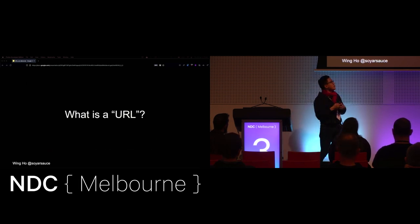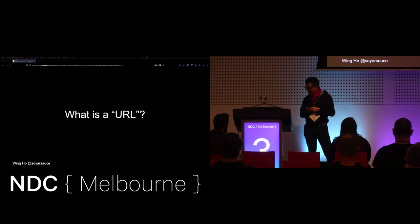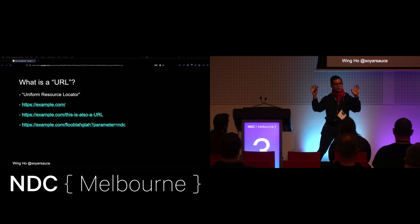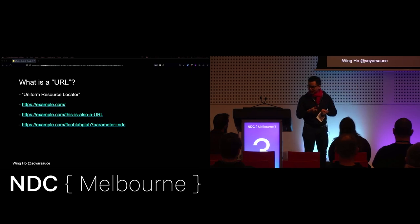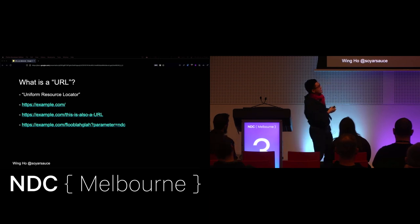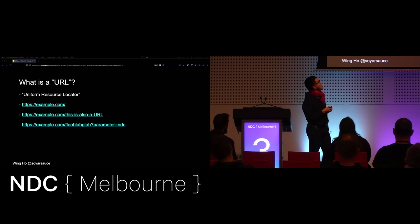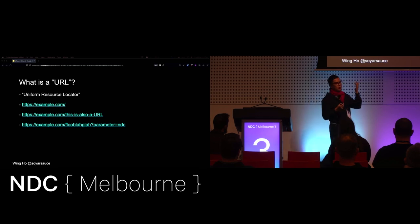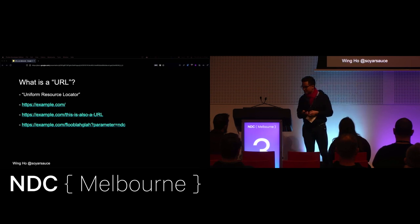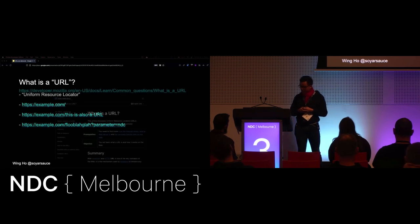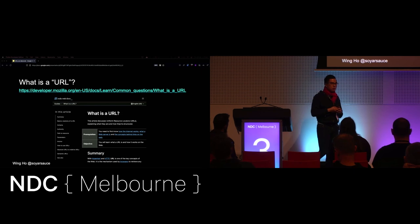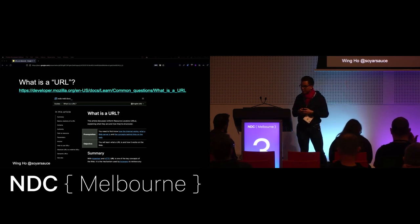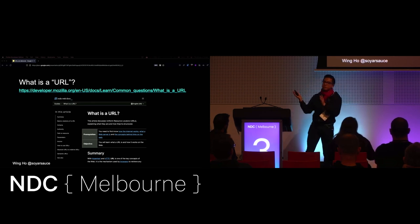And I've been saying the word URL a lot, so what is actually a URL? It stands for Uniform Resource Locator. This is some examples of a URL. example.com is my example domain. These are also URLs — including flubligar with a parameter thingy equals NDC. That's a URL as well; that's probably a 404, but you don't know until you actually visit it. There's a very good page on MDN if you want to learn more about the specifics of a URL.